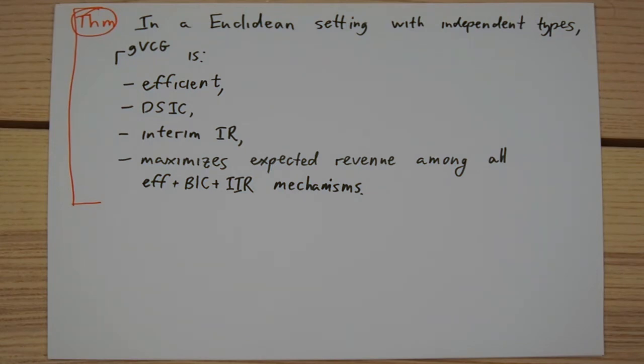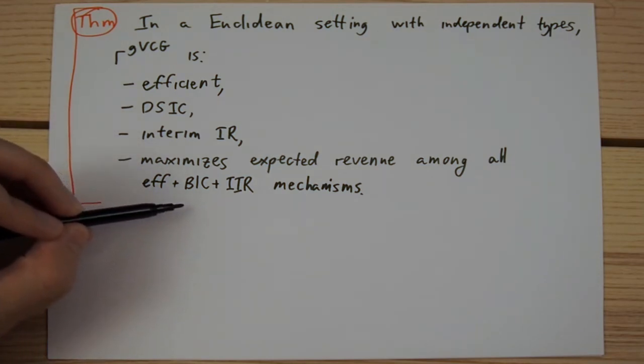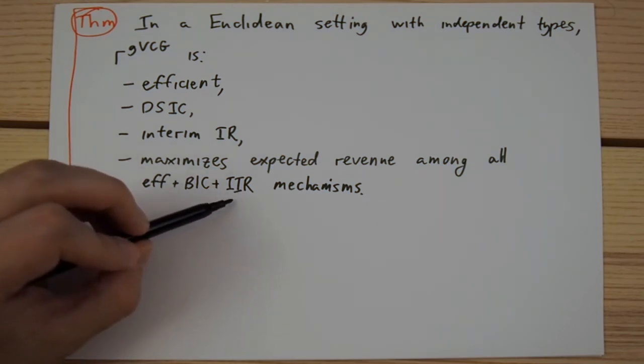However, payoff equivalence allows us to demonstrate an additional property of the generalized VCG mechanism, which is that it yields the highest expected revenue among all mechanisms that implement the efficient allocation in dominant strategies or in Bayes-Nash equilibrium, and are interim individually rational.